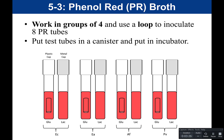Normally in the lab, this would be done in groups of four. Each person would have four phenyl red broth tubes — one with a plastic cap containing a Durham tube inside, and one with a metal cap. The Durham tube is there to determine if gas is produced. The plastic cap tube contains glucose; the metal cap tube contains lactose. This helps distinguish which tube is which even if caps are accidentally switched.